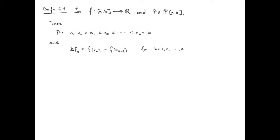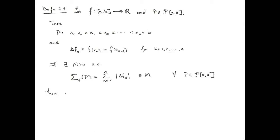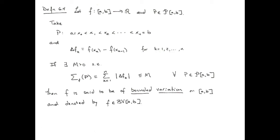Now if there is some positive number M such that all of our variations with respect to every single partition are bounded above by M — where the variation sigma_f(p) is the sum from k=1 to n of the absolute values of the delta f_k's — then we say that f is of bounded variation on the closed interval [a, b]. We typically denote that by BV, followed by whatever interval we are talking about.